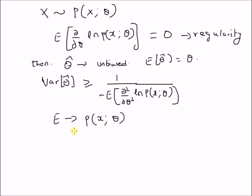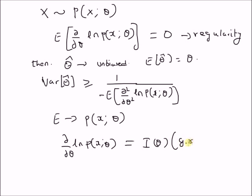Moreover, the unbiased estimator theta-hat can be determined if the first derivative — that is, d/d-theta of the logarithm of the likelihood function — has the following structure: I(theta) multiplied by (g(x) minus theta). If the first derivative can be written as a product of two functions I(theta) and (g(x) minus theta), then the unbiased estimator theta-hat can be determined, and this estimator will be the minimum variance unbiased estimator of theta.